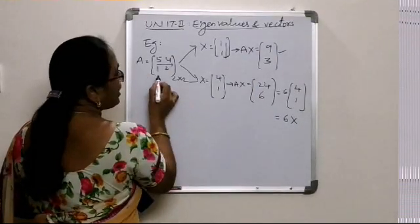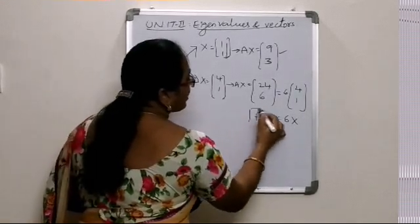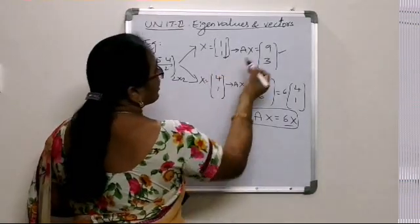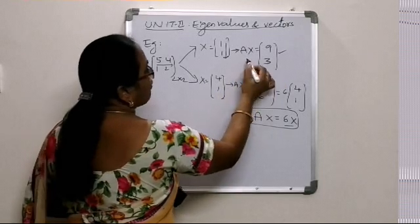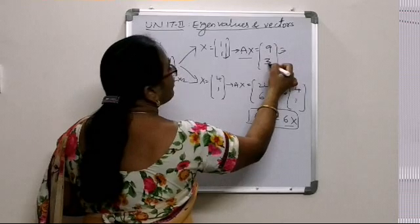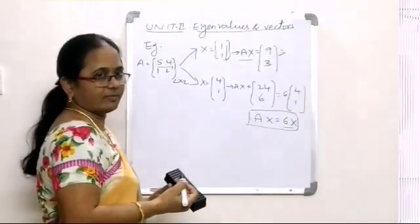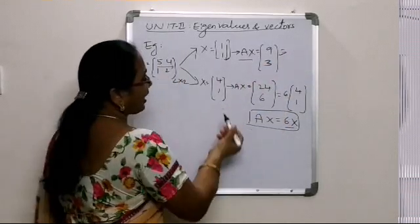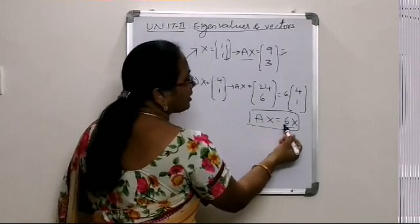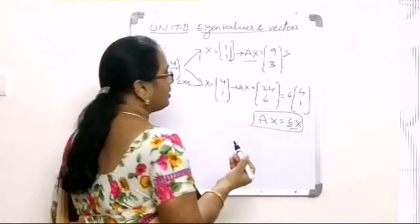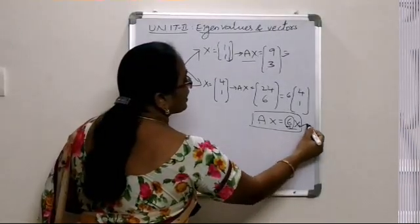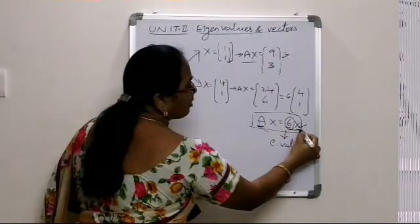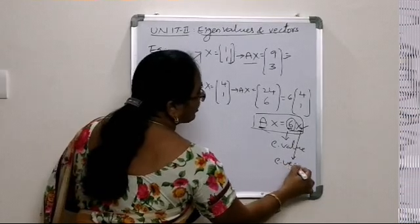In the second case, when A is multiplied with column x we are getting a resultant vector which is 6 times the given vector, whereas that is not the case in the first case. In the first case, Ax gives a new column which is not a scalar multiple of the given x itself. In the second case, A times x is 6 times x itself.